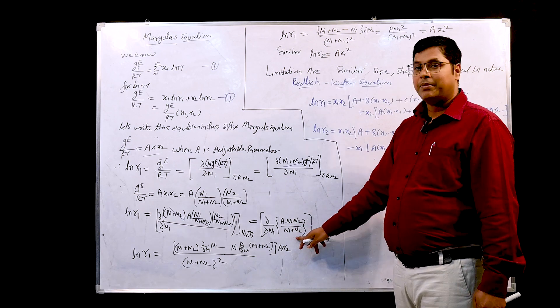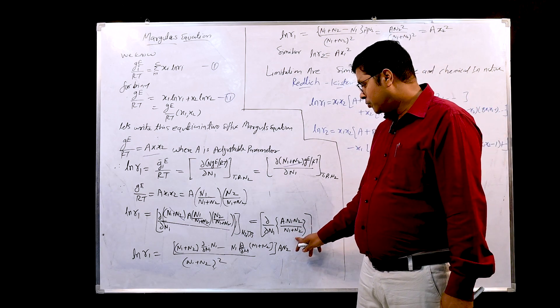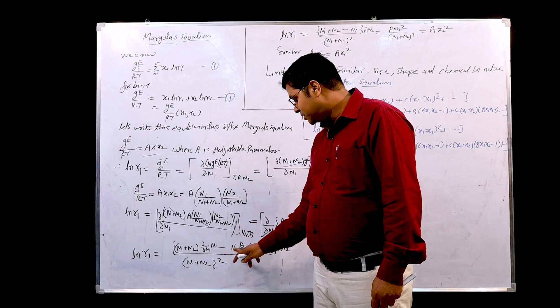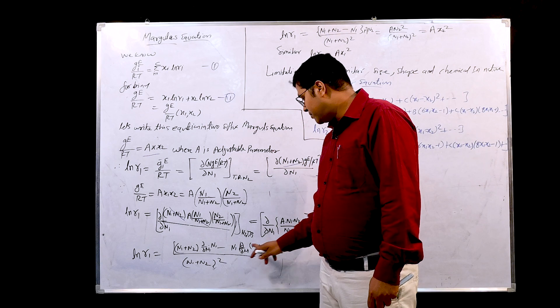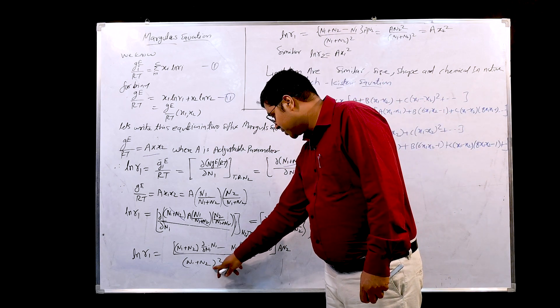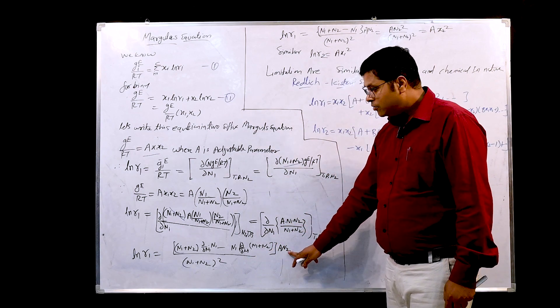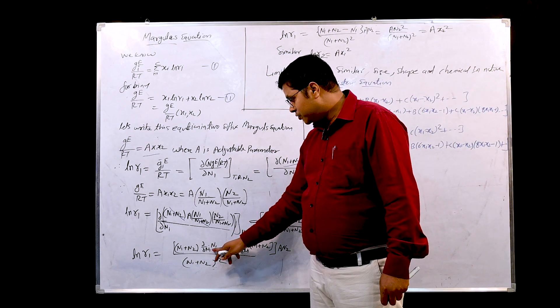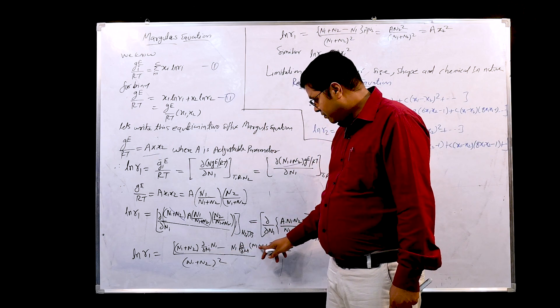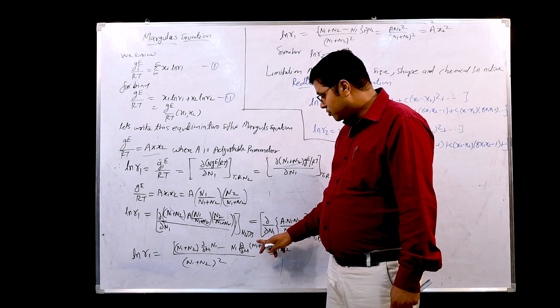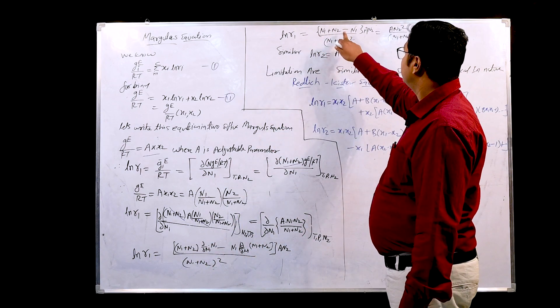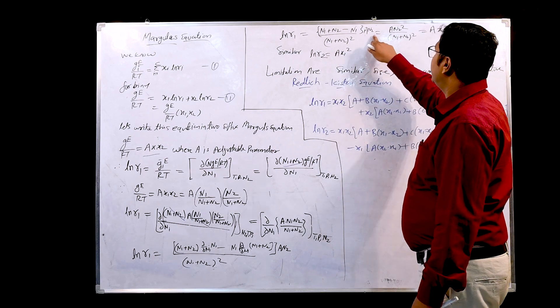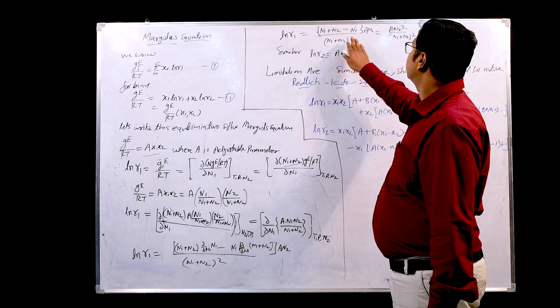For this n1 upon n1 plus n2 we apply the differential formula to calculate such thing: denominator into differentiation of numerator minus numerator into differentiation of denominator divided by square of the denominator. This square of the denominator we applied here and keeping A n2 outside. While solving this d/d(n1), d(n1)/d(n1) will be 1. d(n1)/(n1 + n2), n2 will be constant. We get (n1 + n2) minus n1 into A n2 upon (n1 + n2) square.